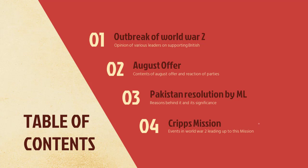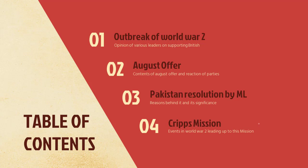The fourth major thing that we will cover today is the Cripps mission — what were the contents of the Cripps mission, the reasons behind sending it, and the reaction of different parties to it. In this slide we will deal with the outbreak of World War II and the resignation of the Congress leaders.